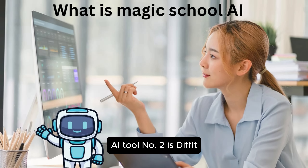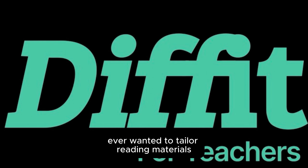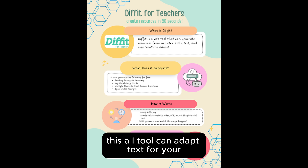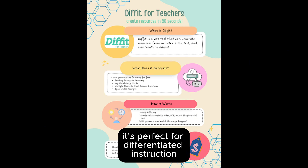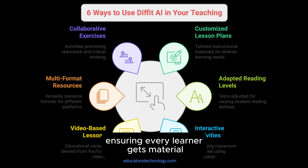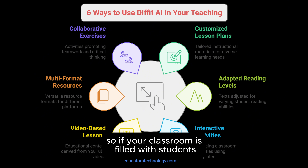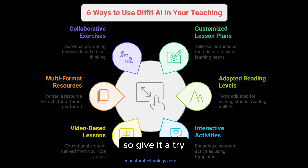AI tool number two is DIFFIT. Ever wanted to tailor reading materials to different ability levels? That's where DIFFIT shines. This AI tool can adapt text for your students' reading levels in seconds. It's perfect for differentiated instruction, ensuring every learner gets material suited to their needs. So if your classroom is filled with students at differing levels, DIFFIT is for you — give it a try.